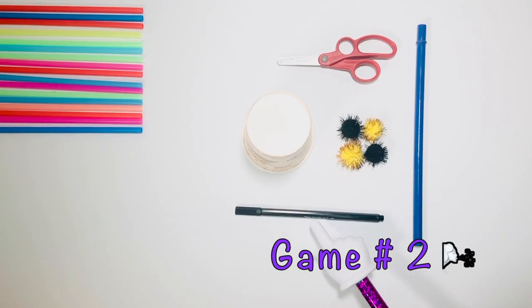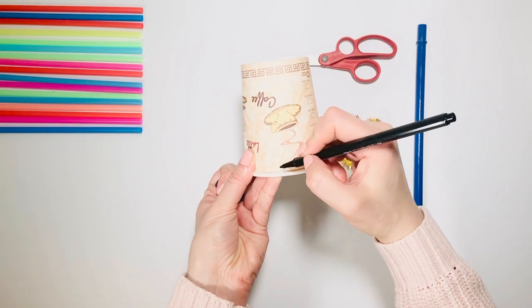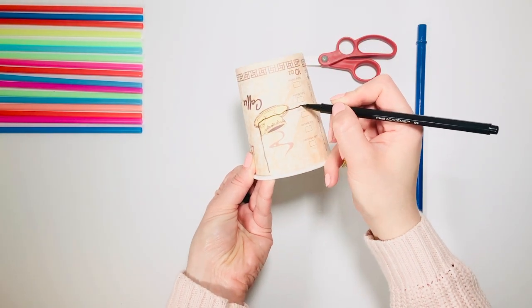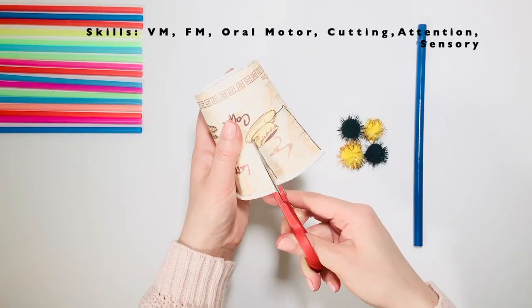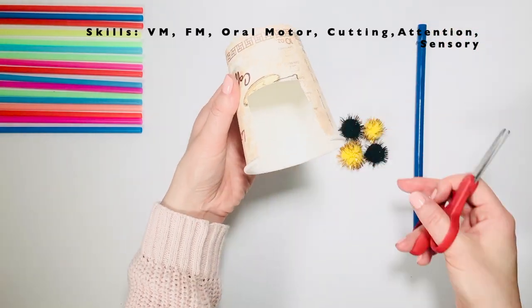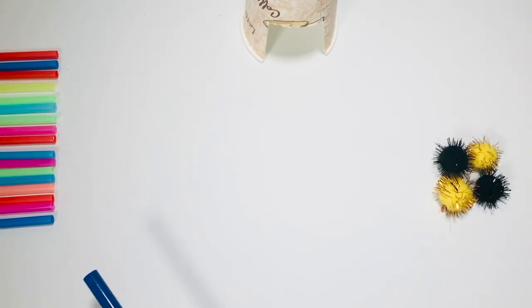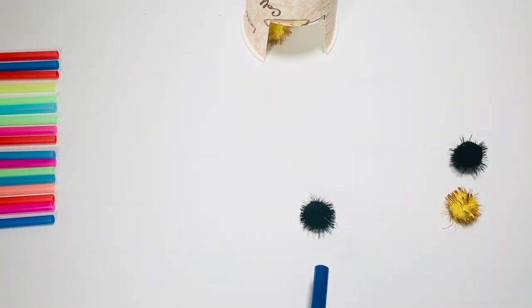For game number two you need a marker, cup, pom-poms, scissors, and straw. Let's make a cup into a fence. Use the straw to blow at the pom-poms so they end up inside the cup.